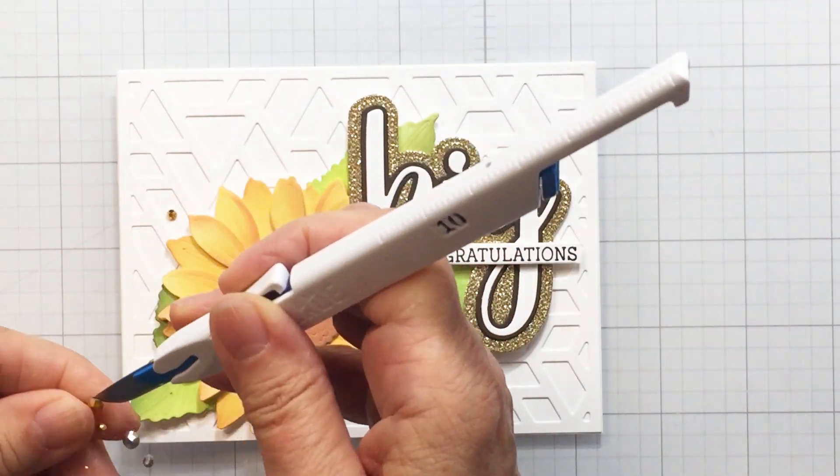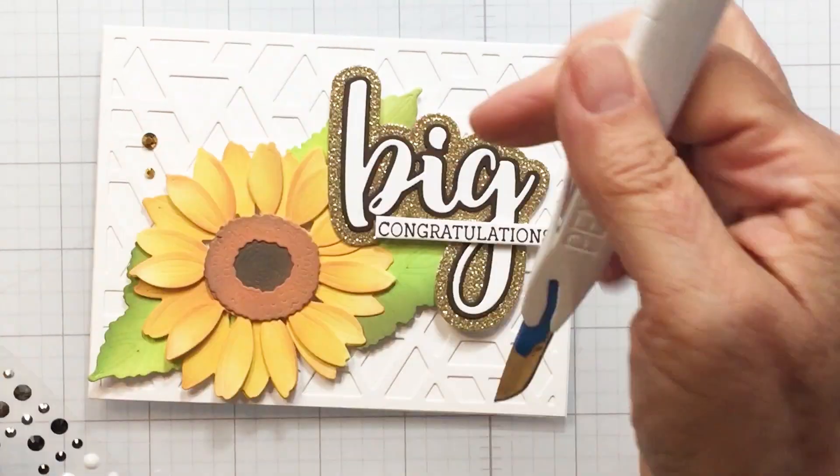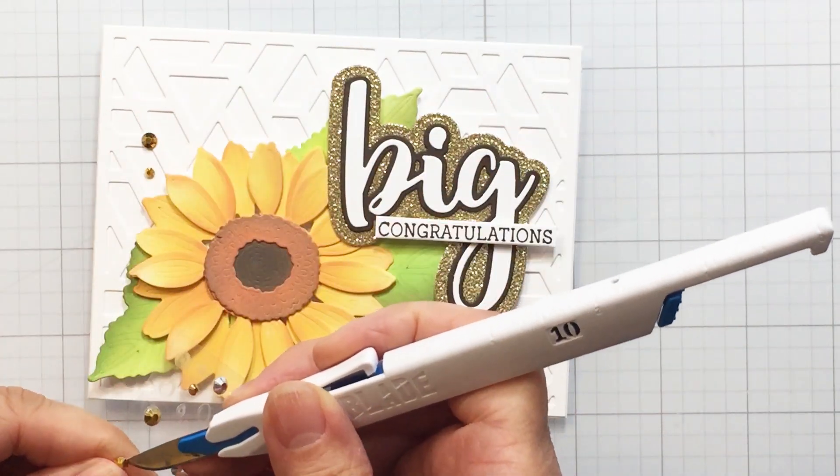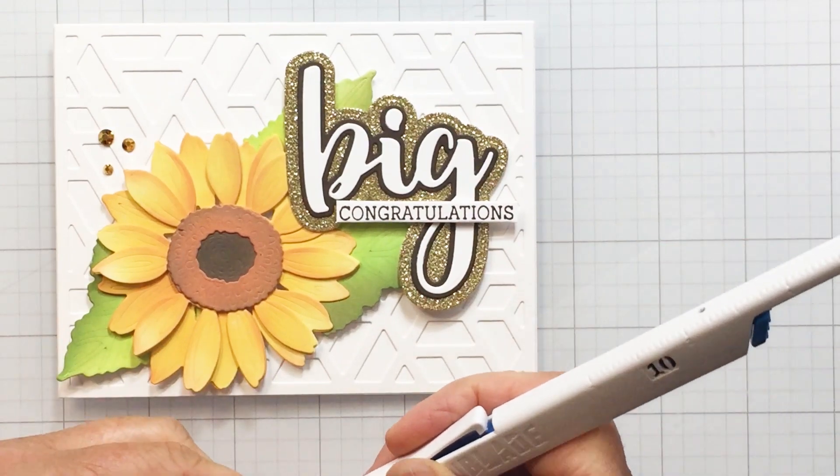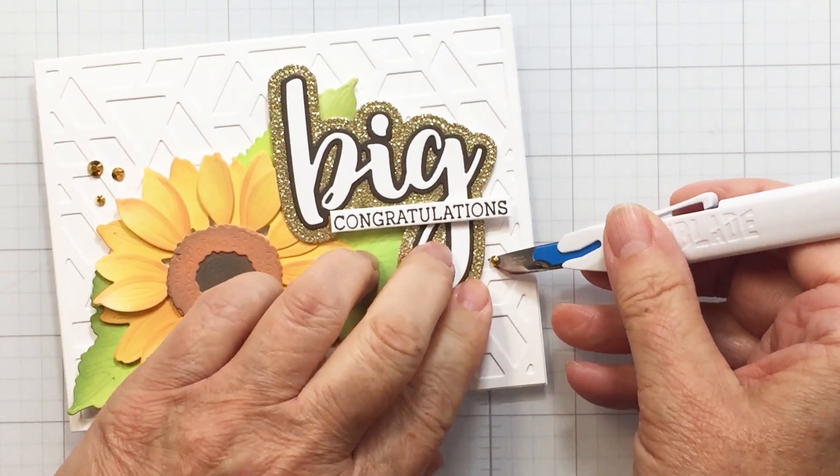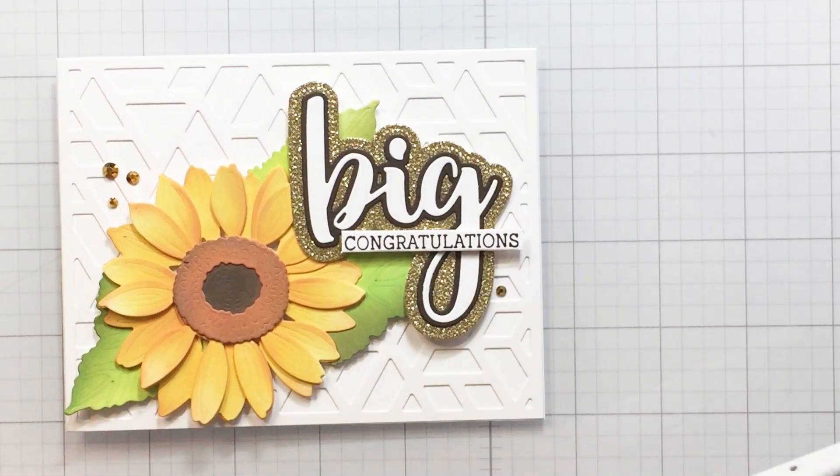So now I wanted to add some back to basics gem stickers here to my project. I'm just using my pen blade to help me get those down. I love the word 'congratulations' layered over top of the word 'big' that was stamped using the big buzzword stamp set, and I just cut it into a strip.